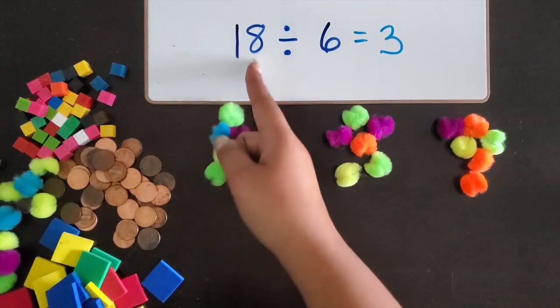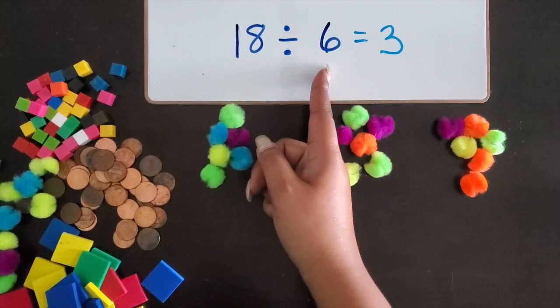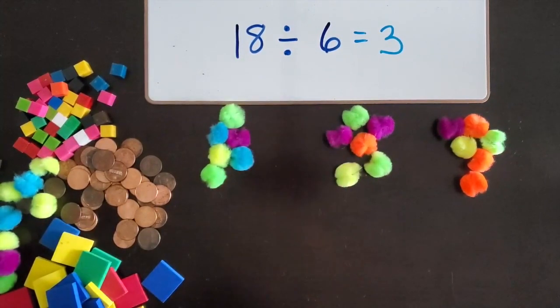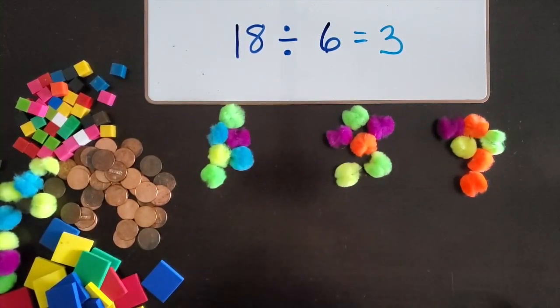We took a two-digit number and divided it by a one-digit number using a concrete model with manipulatives to represent equal groups.